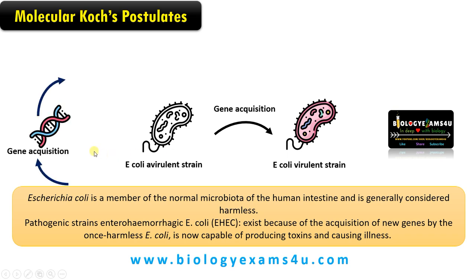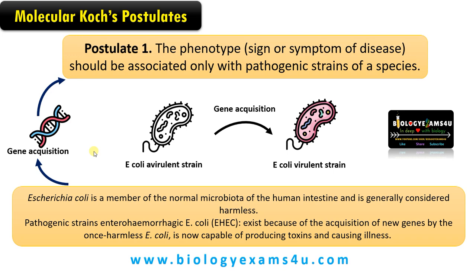Due to this gene acquisition, the avirulent strain becomes virulent — capable of producing toxins and causing illness. From this observation, Stanley Falkow proposed that the phenotype, the signs or symptoms of disease, should be associated only with pathogenic strains of a species. It is associated with a gene. There may be many strains; majority are avirulent not causing disease, but some virulent strains can cause disease. Under this postulate, we can include even organisms that cannot be cultured, like viruses and prions. All diseases are due to genetic changes.